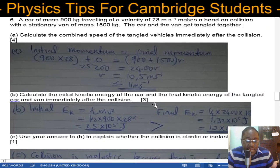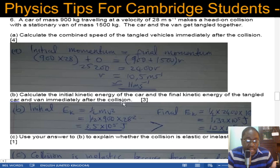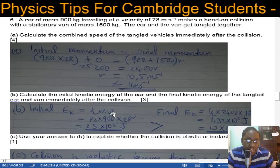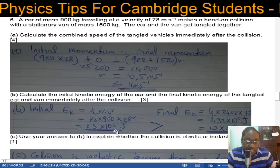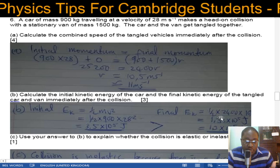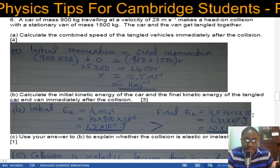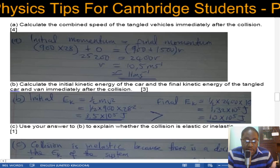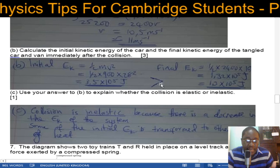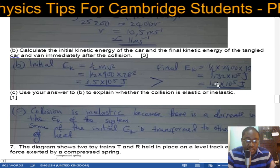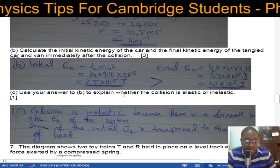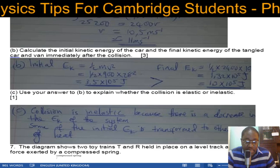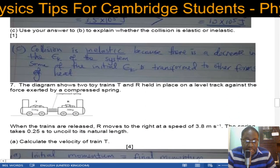Calculate the initial and final kinetic energies. Initial KE of the car alone is ½mv² = 3.5 × 10⁵ J. Final KE is ½ × 2400 × 10.5² = 1.32 × 10⁵ J, which is 1.3 × 10⁵ J to 2 SF. The initial kinetic energy is greater than the final, so the collision is inelastic — kinetic energy is not conserved and is transformed to heat and sound.